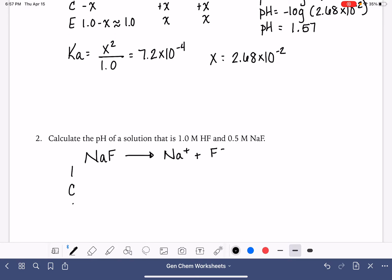We can make an ICE table for this. You might feel like this isn't necessary because you might be able to do this in your head, but just in case you can't, I'm going to show you how this works. So initially with our NaF, we're starting with 0.5 molar NaF. And prior to anything happening, we don't have any sodium or fluoride ion.